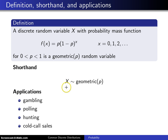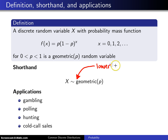The shorthand is that x is distributed as geometric p. One small point to note: the g in geometric here is lowercase. There is a similar and related version of the geometric distribution where a capital G is used, and that is when the support begins at 1, but that will be introduced a little bit later.